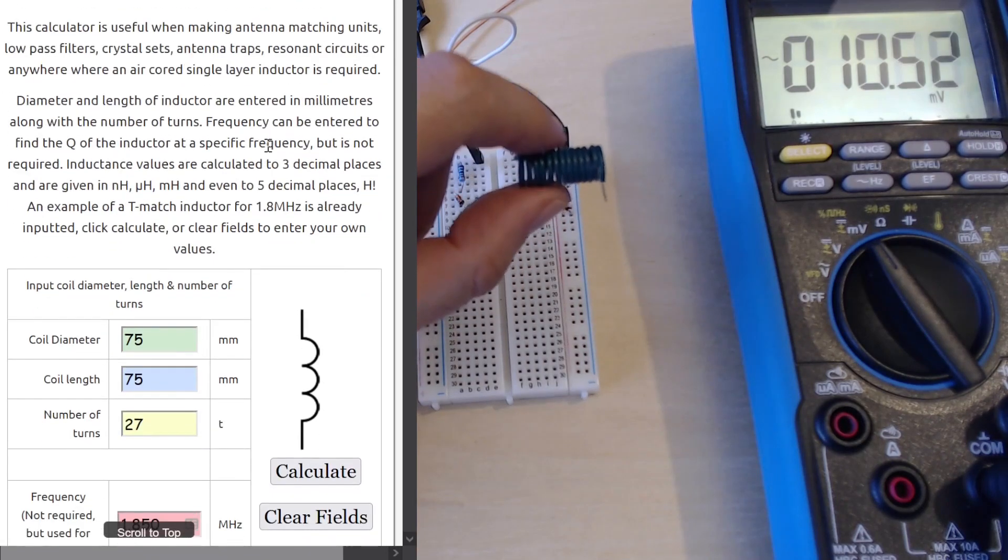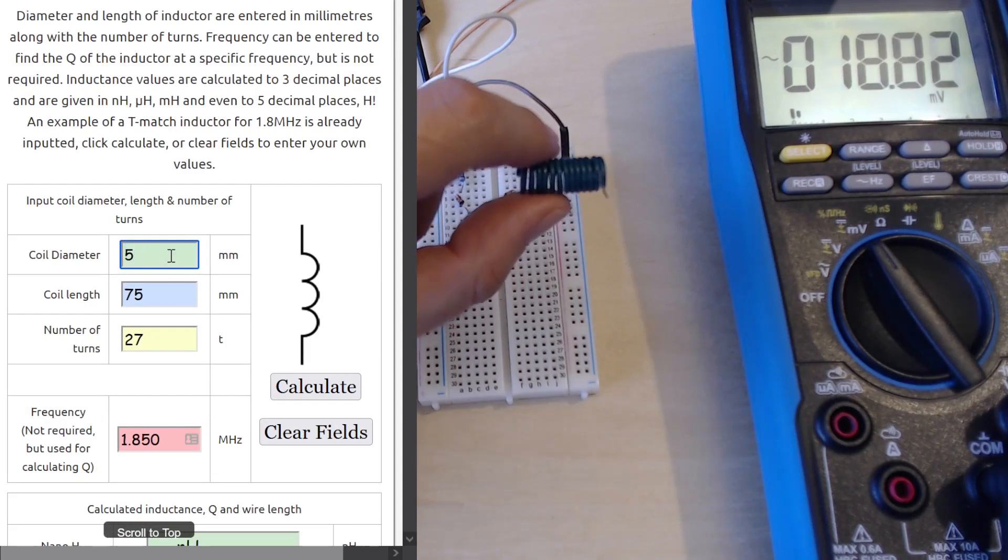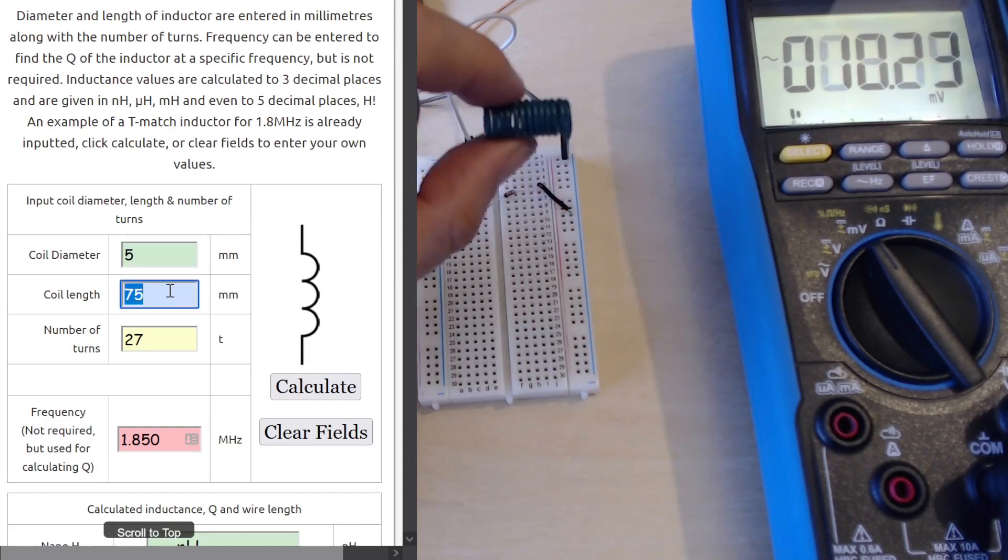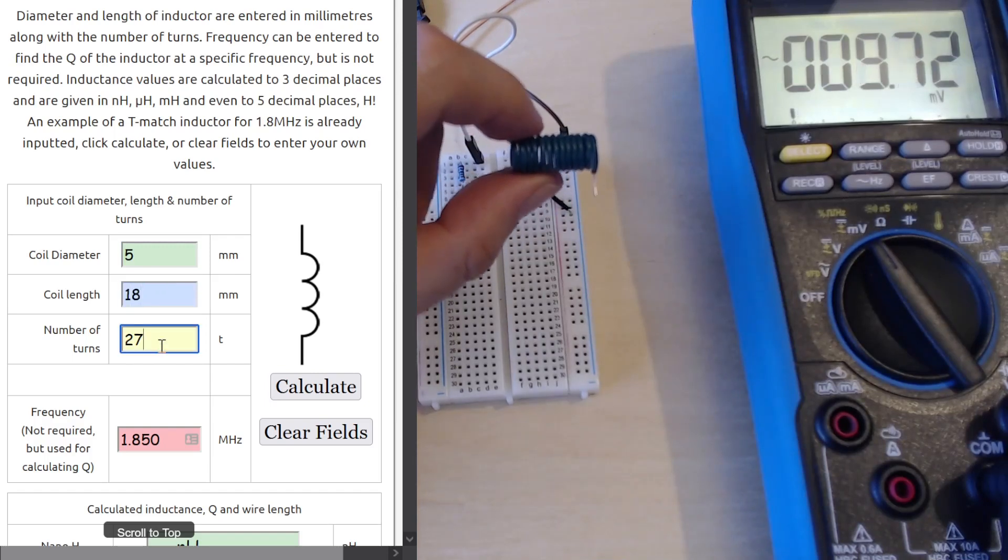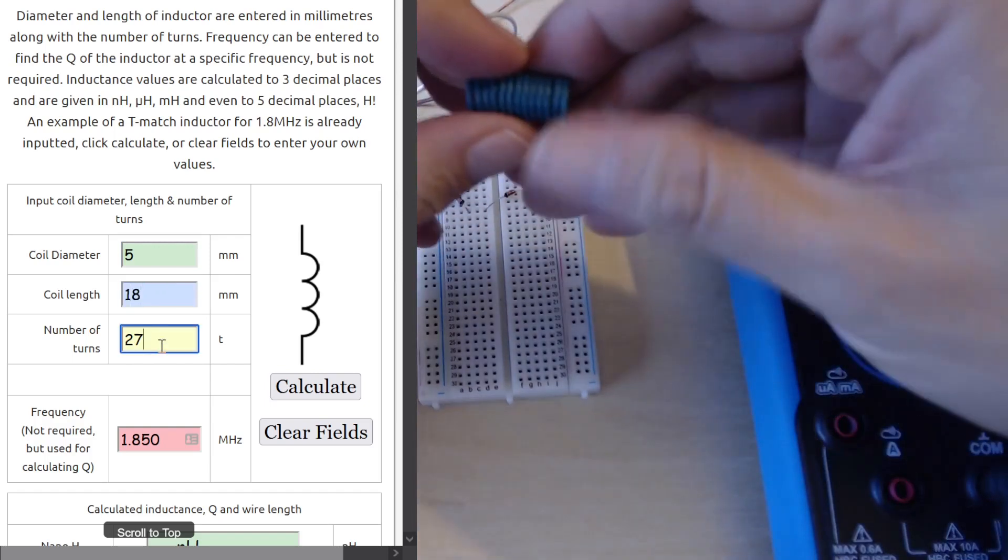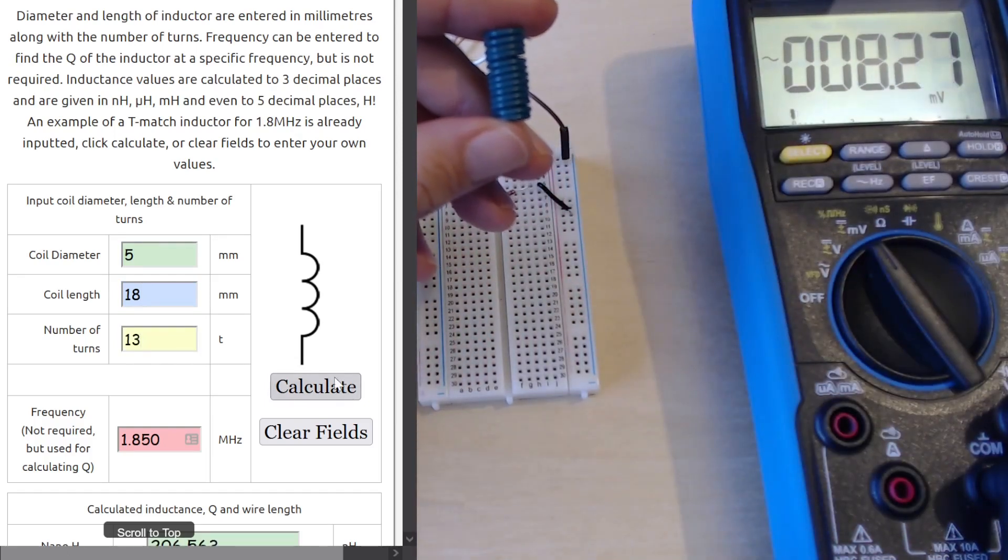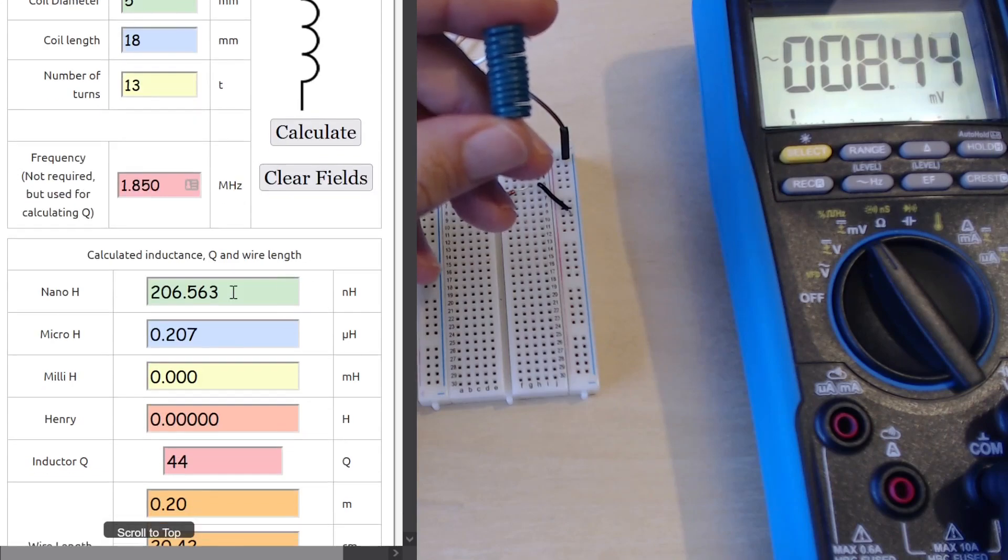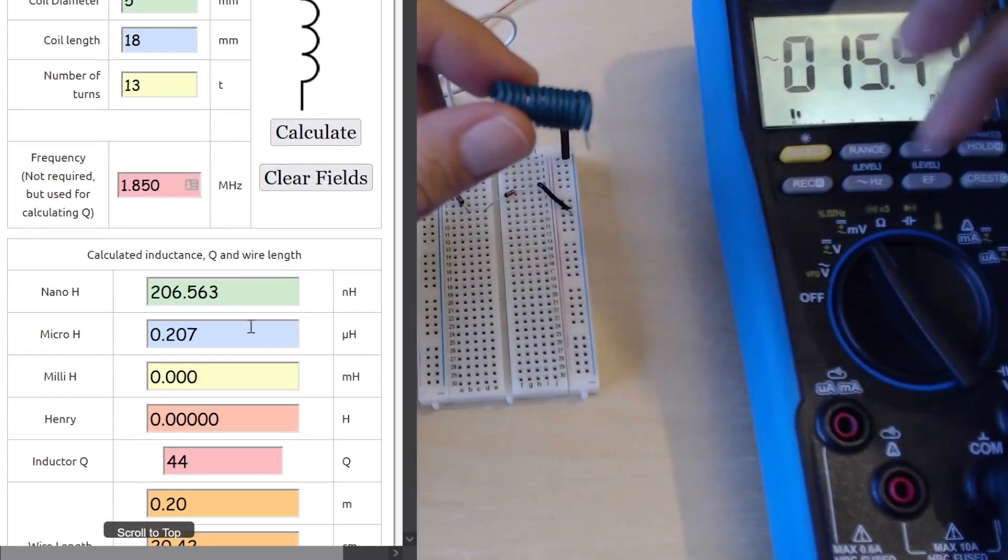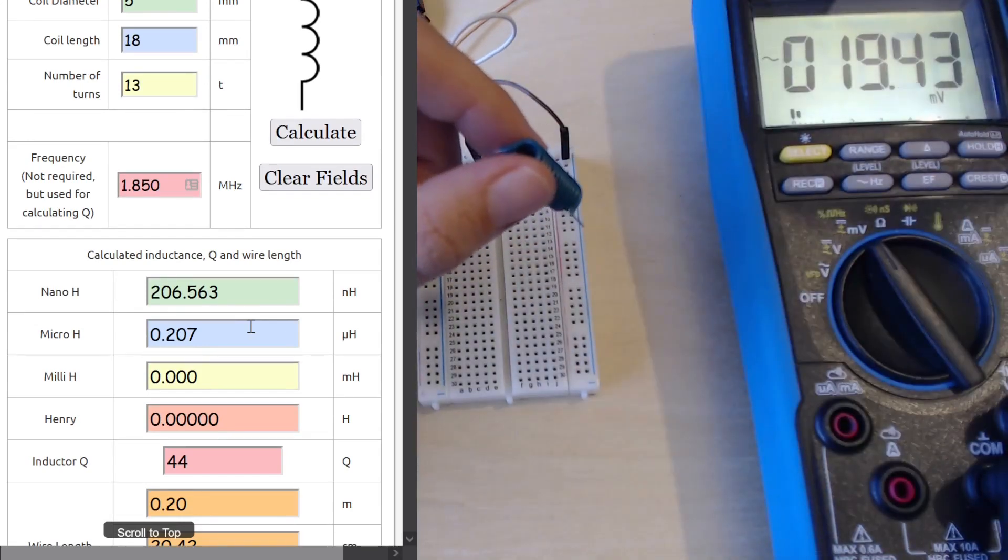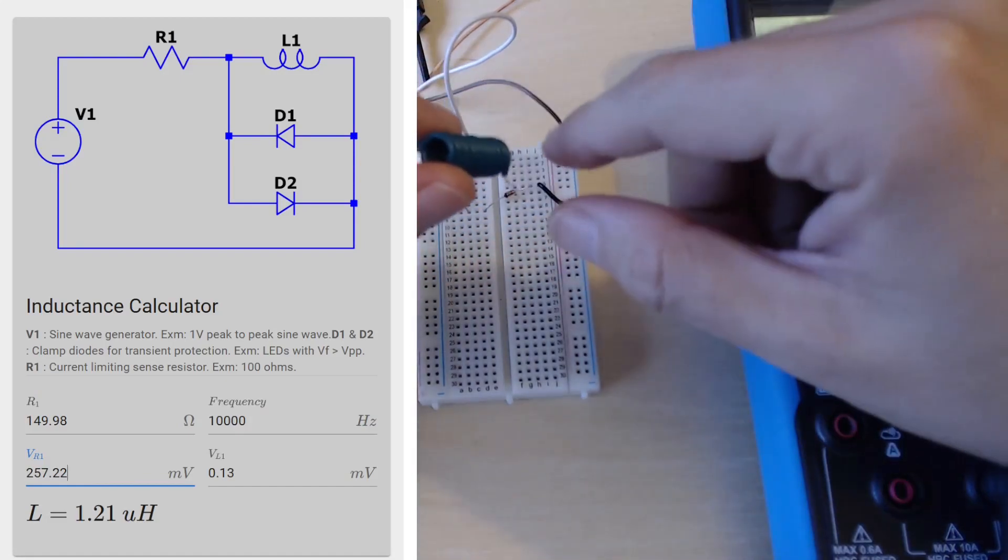Now we can use another calculator off the web. Let's have a look. I'm just going to link this tool in the video description below as well. Our coil diameter is 5 millimeters, and our coil length is 18 millimeters, and we had I guess 13 turns on it. As far as I can count, yeah it has 13 turns on it. Now let's calculate it. So this is supposed to be around 200 nanohenrys.